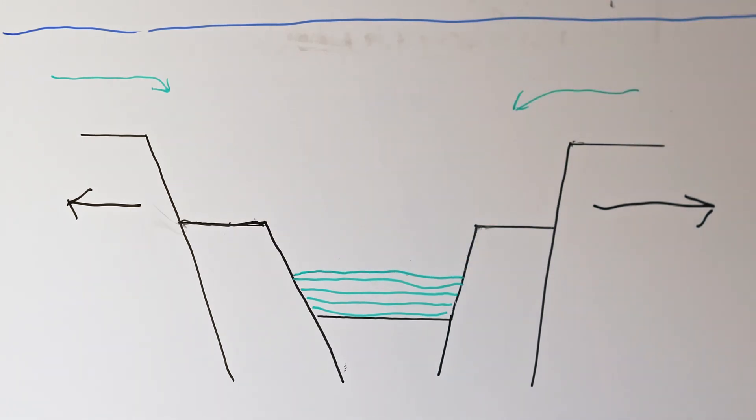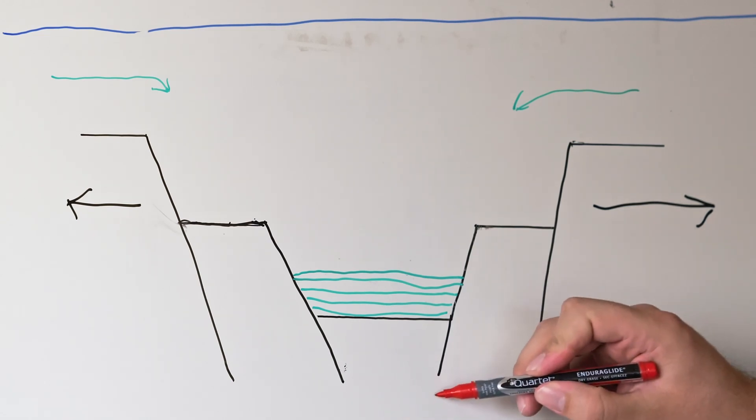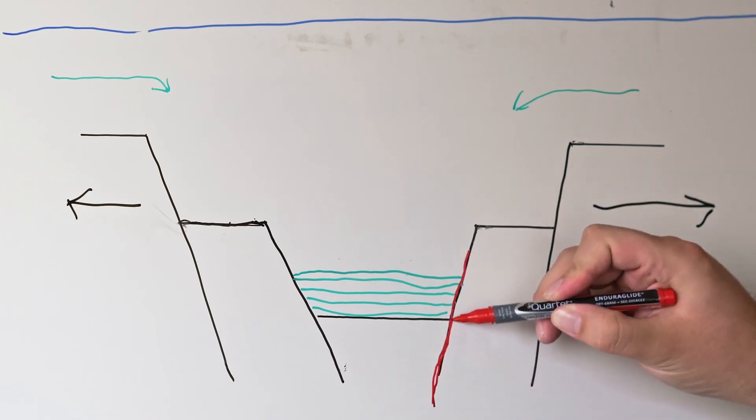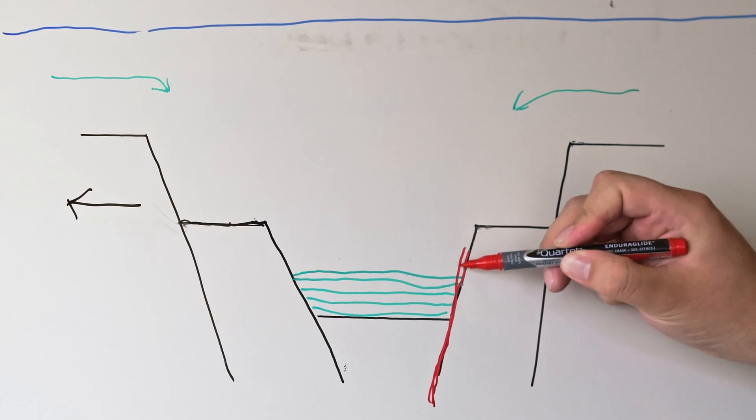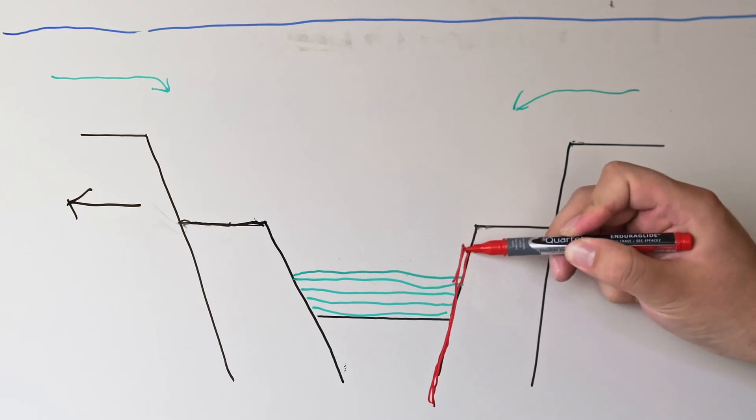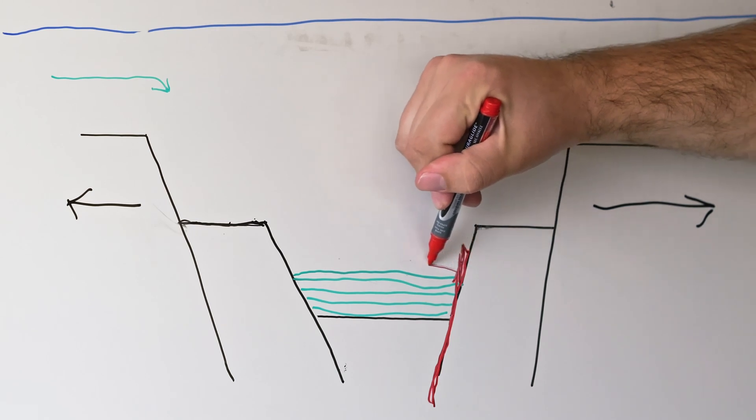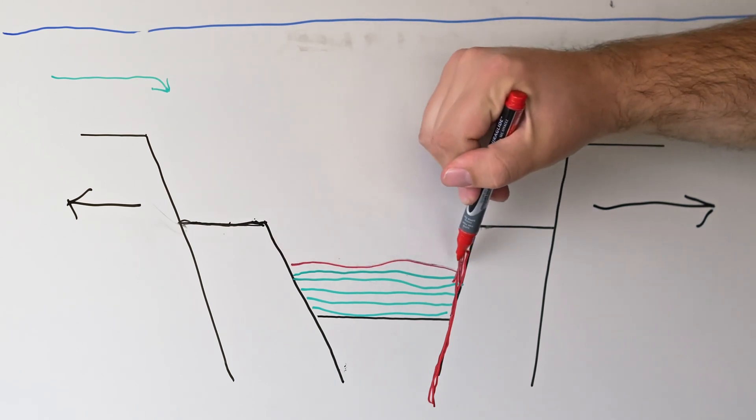we also get thinning of the crust, which causes superheated fluids carrying minerals to come up through these fault structures. As they move up and reach the ocean floor, they form vents,